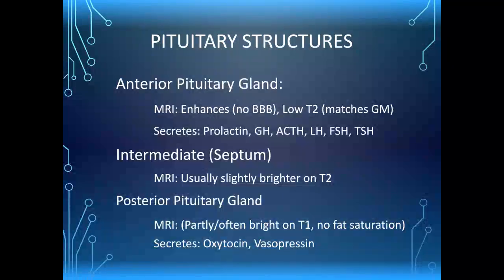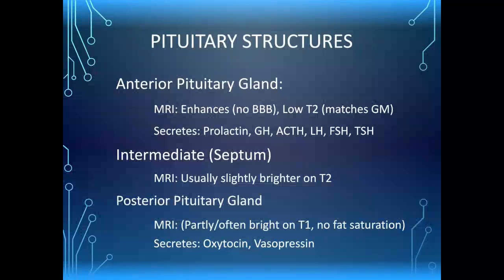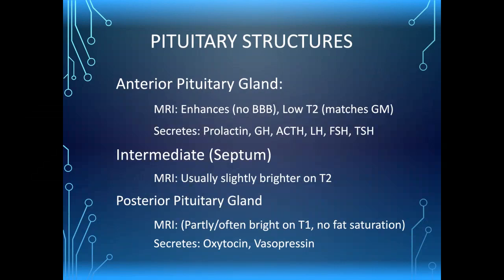In the septum, it's usually brighter on T2, so a lot of people scrolling through coronal images wonder about a pituitary cyst — but it's just a normal pars intermedia, and we must not mistake it for pathology like lymphocytic hypophysitis. The posterior gland is often bright on T1, though it's probably only about 50% of the time. In newborns, it's usually very bright because they are very hormonally active, having received many hormones from their mother. It doesn't fat-saturate, so we can distinguish the pituitary bright spot from a lipoma, which occurs quite often around these areas.